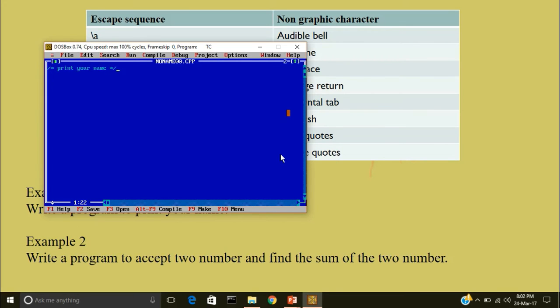Now the first step is I will include the header file. Hash include iostream.h. The next header file is conio.h. And we are using conio.h for clear screen function and getch function. Now I will write void main parenthesis. Open the main body of the program. And I will write clear screen. I want to clear the screen before displaying the output.